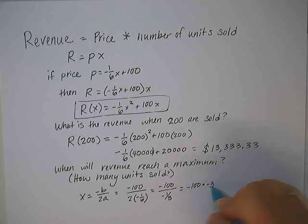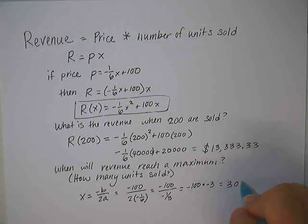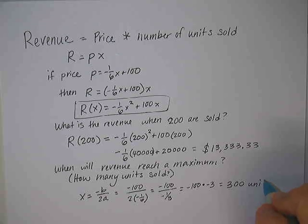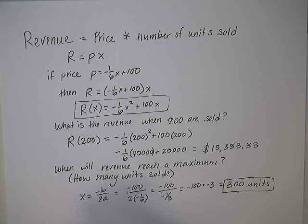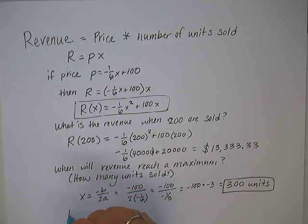When you divide by fractions, we can copy dot flip. Copy the numerator, and then instead of dividing, we multiply the reciprocal of the denominator. So the maximum revenue is reached when 300 units are sold.